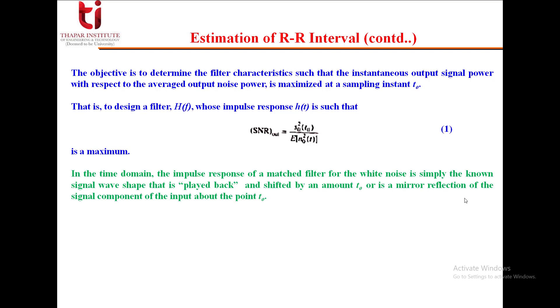In the time domain, the impulse response of a matched filter for white noise is simply the known signal wave shape that is played back and shifted by an amount T0, or it is a mirror reflection of the signal component of the input about the time T0. Therefore, a matched filter derives its name from the fact that it is matched to the signal component of the input.